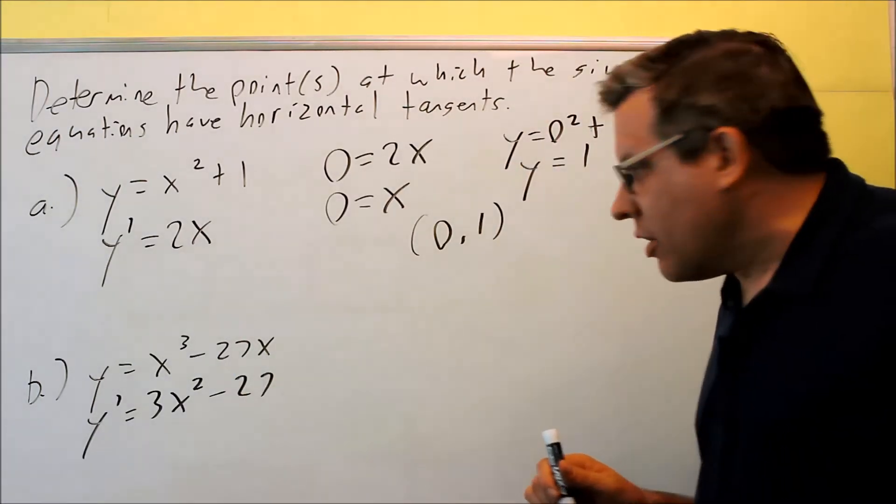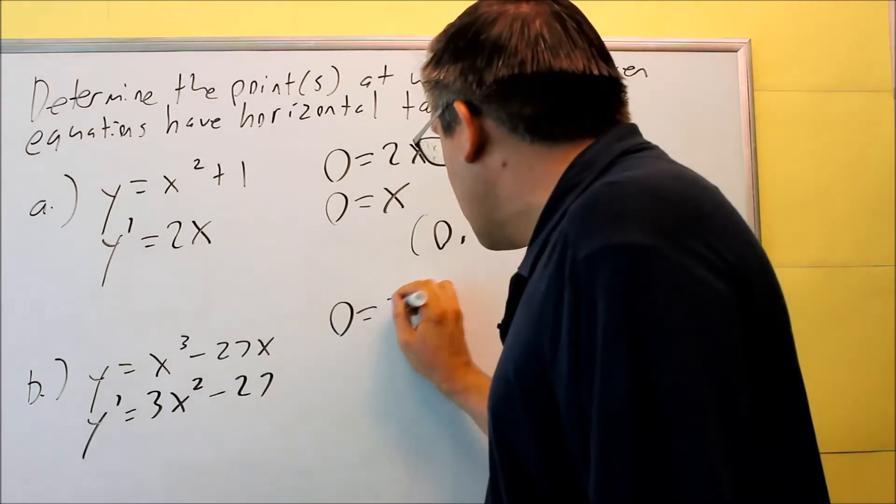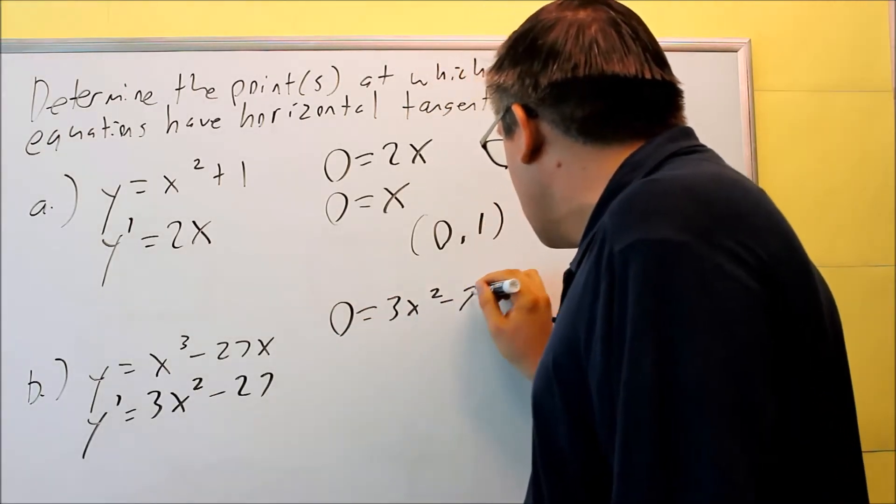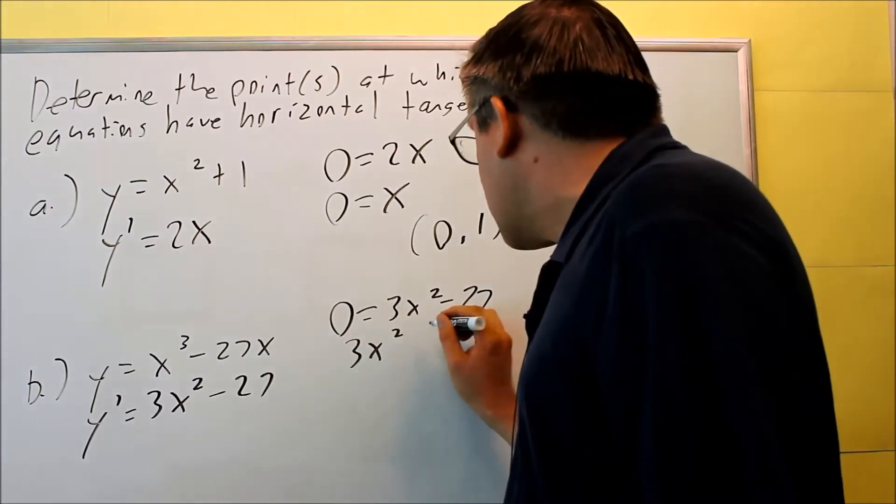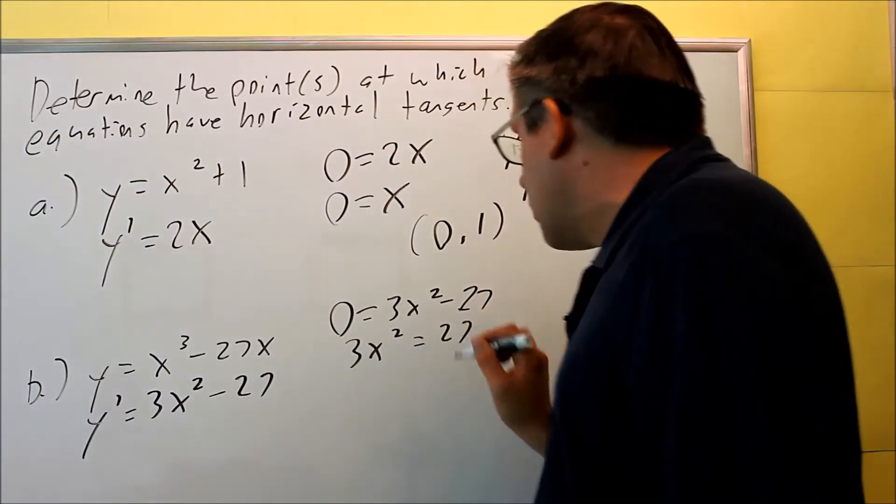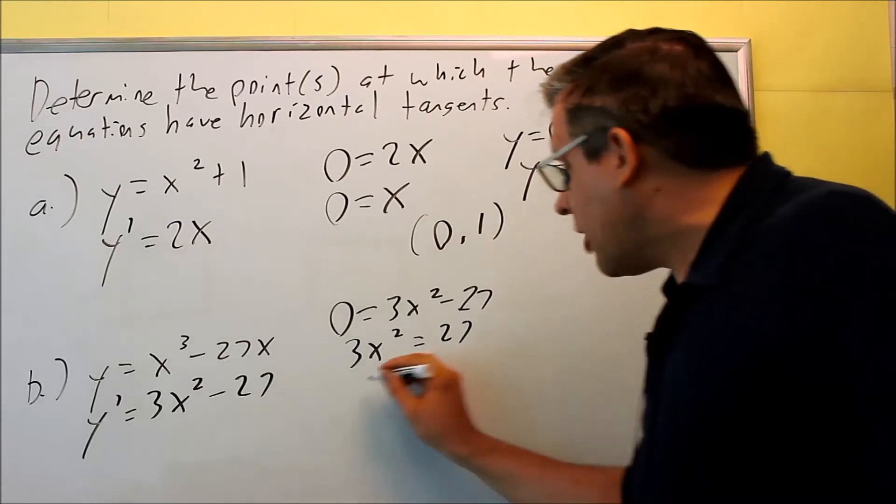We need to set that equal to zero, zero equals 3x squared minus 27. We're going to solve for x, so when we do that, we get 3x squared equals 27, divide by 3.